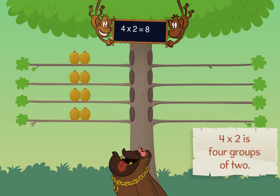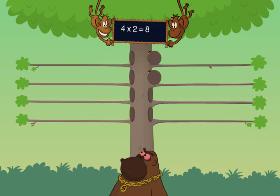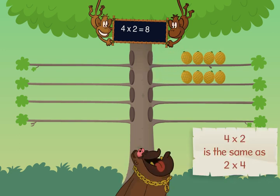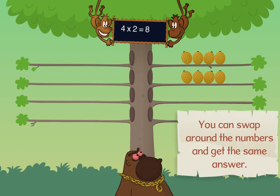Four times two is four groups of two. Four times two is the same as two times four. You can swap around the numbers and get the same answer.